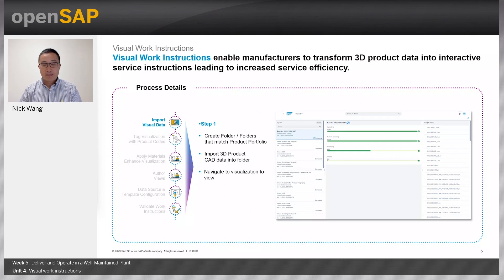The first step of creating visual work instructions is to import 3D data into EPD visualization. The input can come from any 3D mechanical CAD software — such as Siemens NX, Solid Edge, CATIA, SolidWorks, Creo, and so on. We support almost all native CAD file formats in EPD visualization. Once the visual data is imported, users can navigate to the folder to view the visualizations.